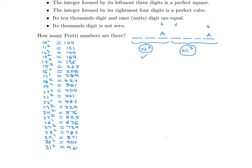Now for the four-digit perfect cubes, we need cubes from 1000 to 9999. The first is 10 cubed (1000), and going up: 11, 12, 13... through 21 cubed (9261). Since 22 cubed exceeds 10000, our list of four-digit perfect cubes runs from 10 cubed to 21 cubed.